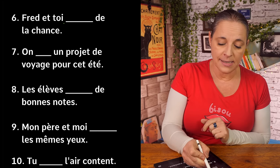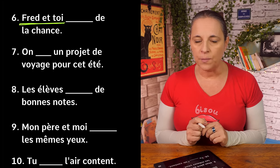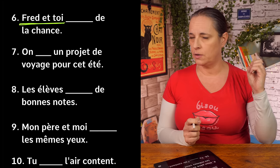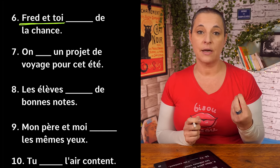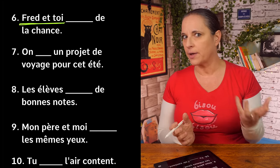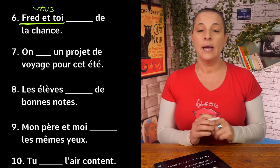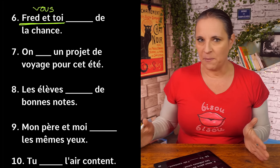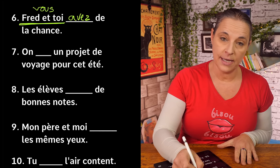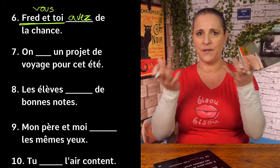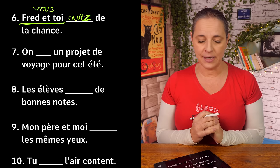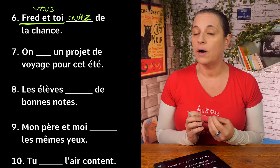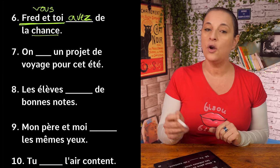Fred et toi — something — de la chance. Fred and you: it has 'you' in it but it's not 'tu' because you're not alone. The next way of saying 'you' is 'vous'. With 'vous' comes 'avez' — vous avez. Fred et toi avez de la chance — Fred and you are lucky. 'Chance' means luck.